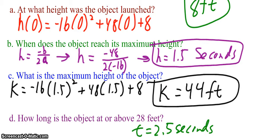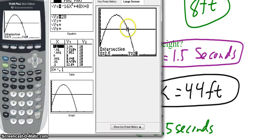And so think about what that means. This point is where the object was above and then now became below 28 feet. So now we need to find this intersection.